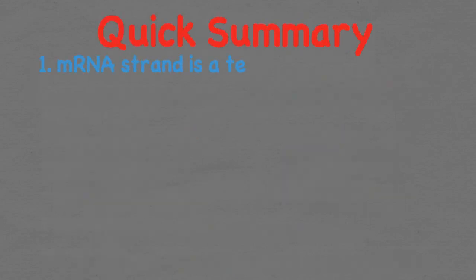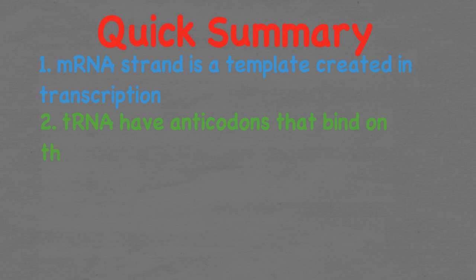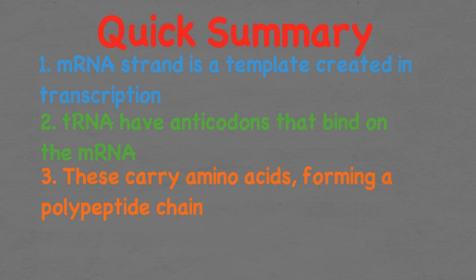To summarize: the mRNA strand, which is a template of the DNA sequence, is created during transcription. tRNA molecules have anti-codons that bind to the codons on the mRNA, and carry amino acids that are attached at the catalytic site, forming a polypeptide chain. The polypeptide chain then moves down the endoplasmic reticulum for further processing.